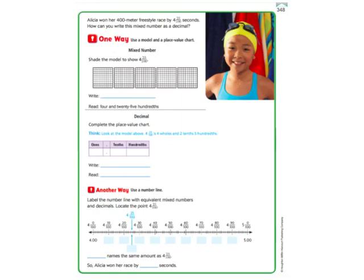Okay, so if you're in my class, you should have filled out page 347 as we are going through that video. Now we're flipping over to the back, and it's page 348. We're going to try another way to do these. This time we're doing, they're giving us a mixed number, and we're going to have to write that as a decimal. So Alicia won her 400 meter freestyle race by four and twenty-five one hundredths seconds. How can you write this mixed number as a decimal?